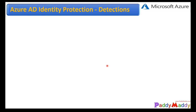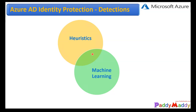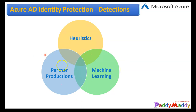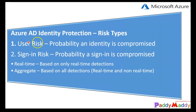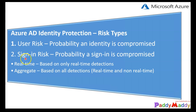When we talk about those detections, it will use heuristics, machine learning, or partner products for the detection mechanisms. When you see a user sign-in as a risk, it is considered two types: one would be the user risk, and the other one would be the sign-in risk.